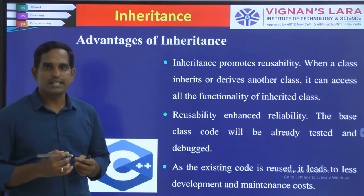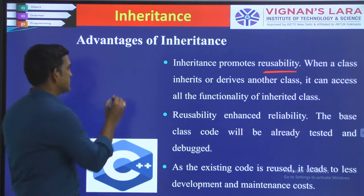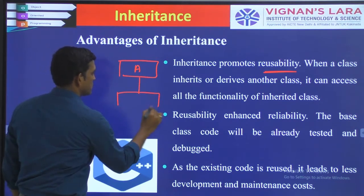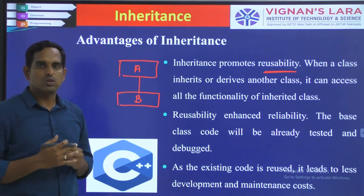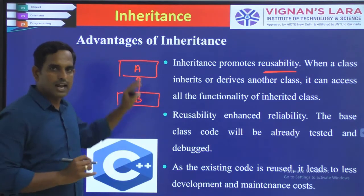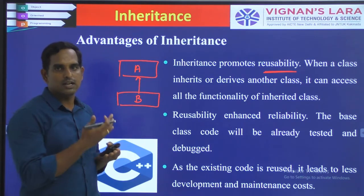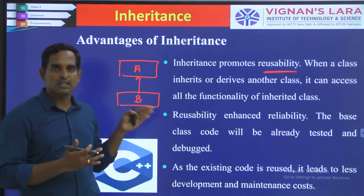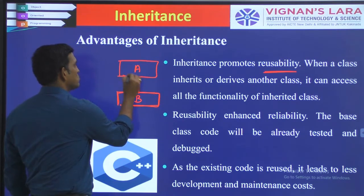The first and foremost advantage inheritance provides is reusability. Inheritance is about having existing classes and trying to create a new class B which will use the properties of the existing class. You are not rewriting everything — you are just using the already existing class which you have in your libraries or in your program. This existing class may define its own data variables, its own member functions and other functionalities. What you are doing is creating a new class and reusing this existing class.